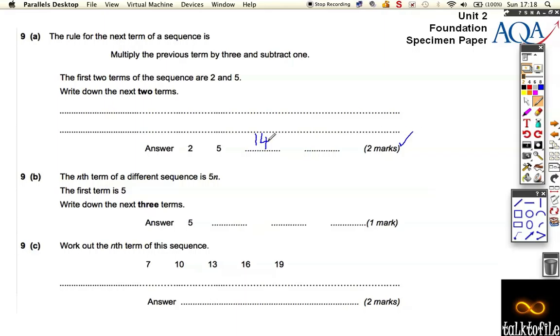It's worth the mark. Then we need to triple this, so triple 14. Well, 14 plus 14 is 28, plus another 14 is 42. We're going to take away 1, 41, and there's two marks.